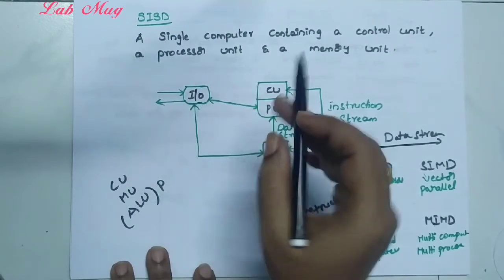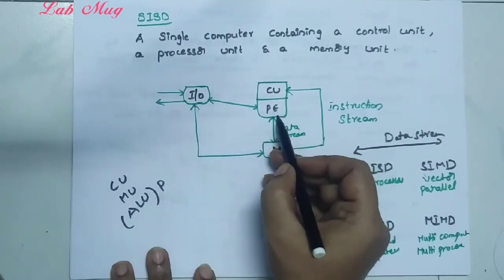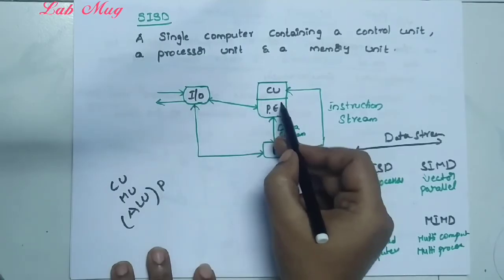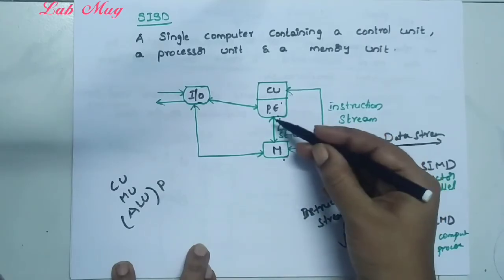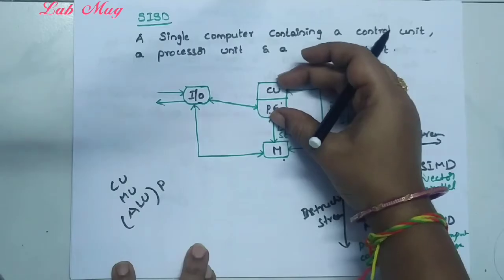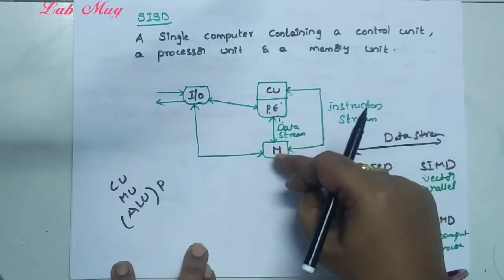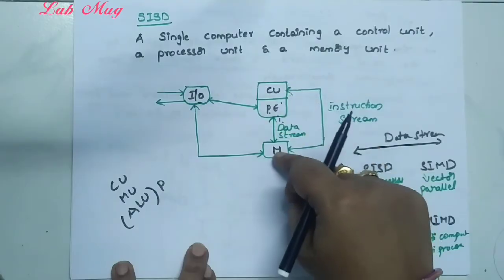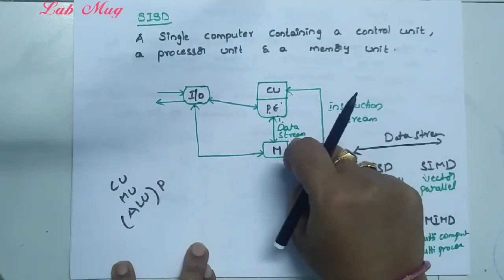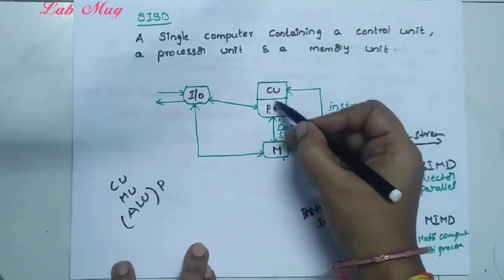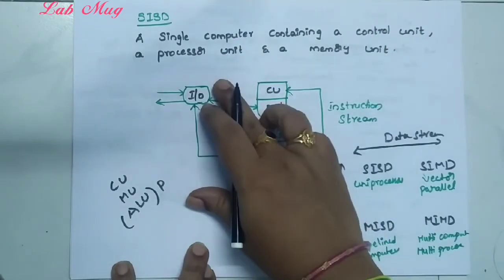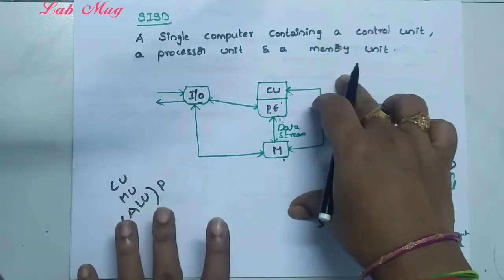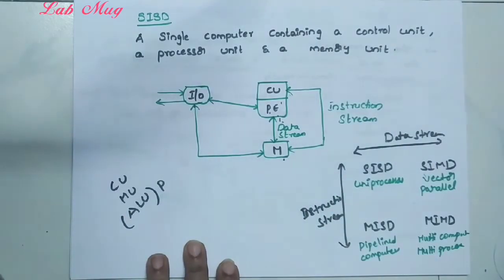The processing element is referred to as PE. Input/output provides input and output. From input/output, signals go to the control unit and processing unit. From memory, instructions are fetched and operations are performed on data via the processing unit — because there is one control unit and one processing unit. Only one processing element is present.